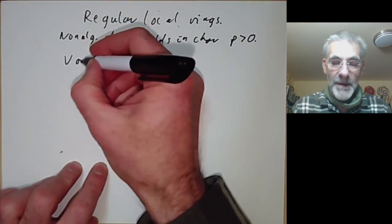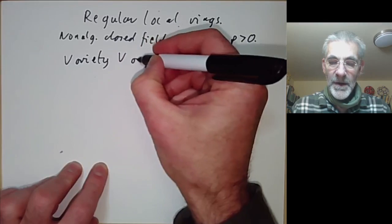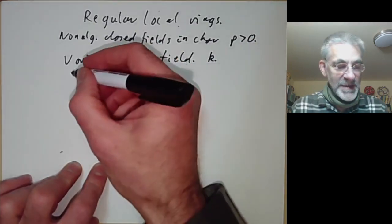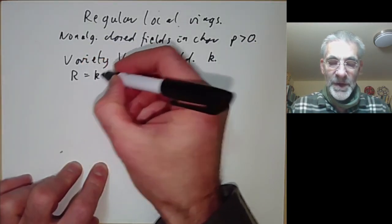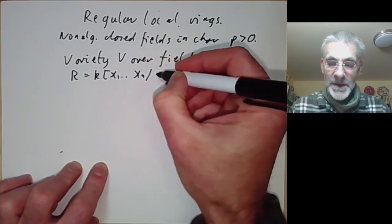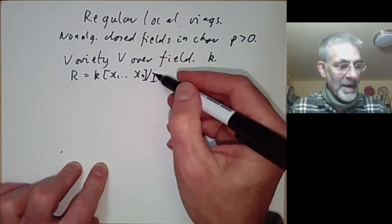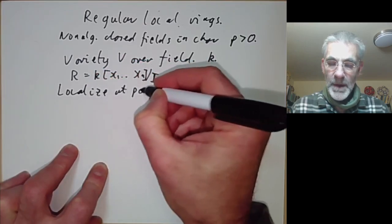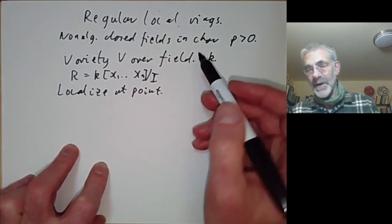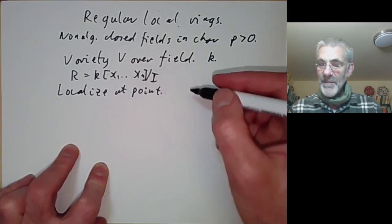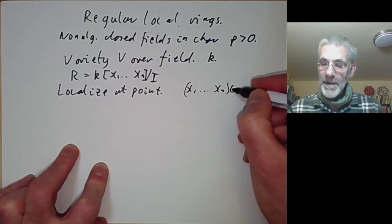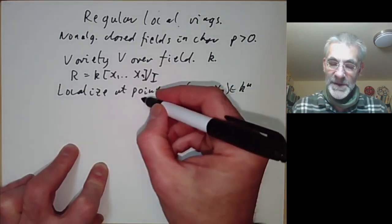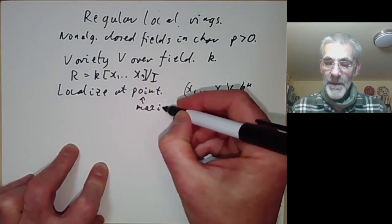Suppose we take a variety V over some field. Then its coordinate ring will be the ring of polynomials over the field in n variables, quotiented out by some ideal, and then we can localise at some point. If you're working over an algebraically closed field a point is just a point (x₁, …, xₙ) in kⁿ. However if the field isn't algebraically closed, the points can be more general — a point here will correspond to a maximal ideal.